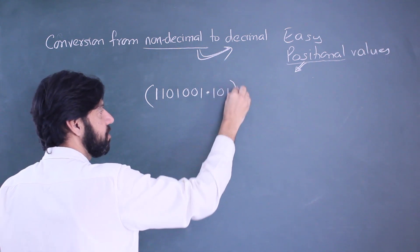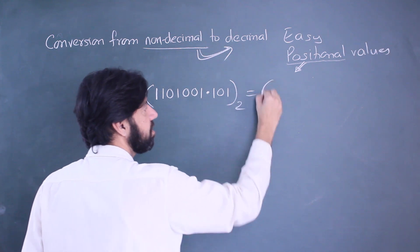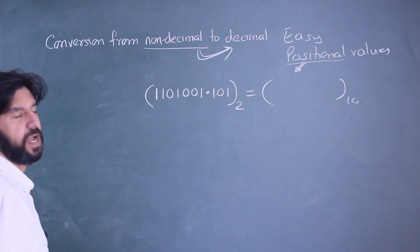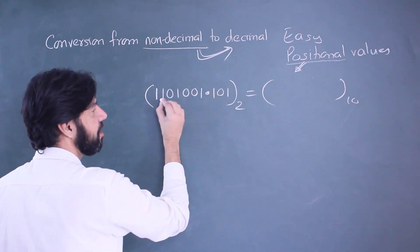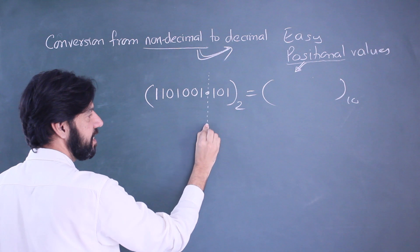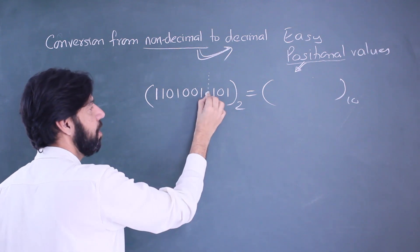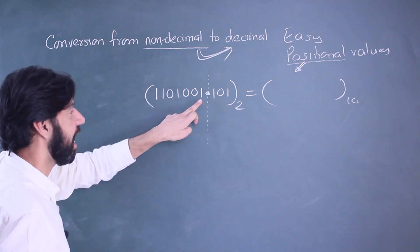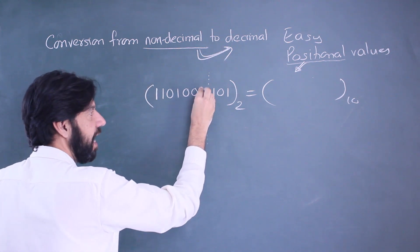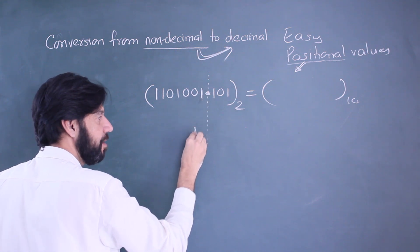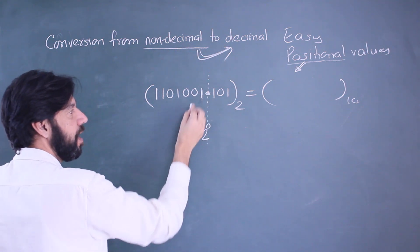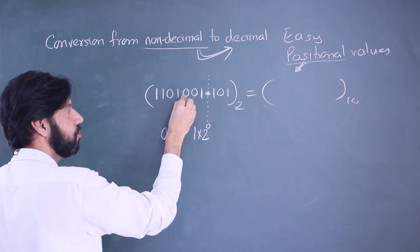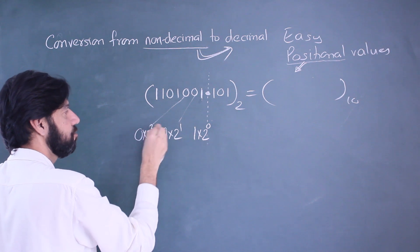So in binary, what is this number in decimal? We work with the integral part. We'll take the decimal point as a separator. To the left are whole powers of two, starting with two raised to zero. Since that is one, that will be one into two raised to zero.